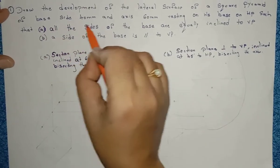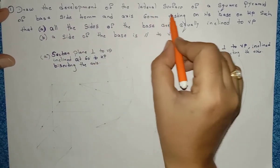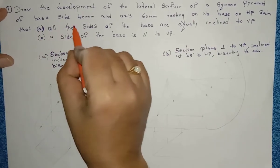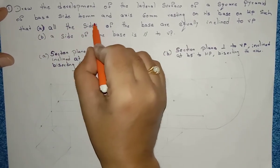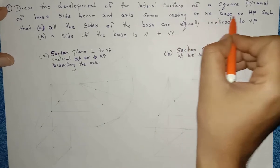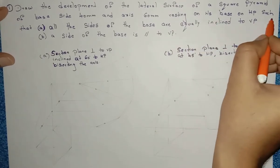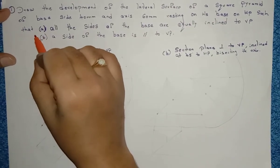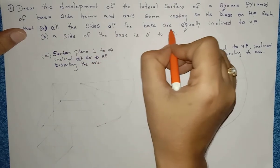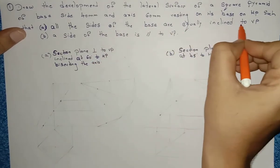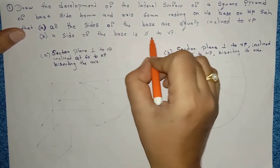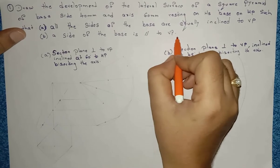First, read the question. Draw the development of the lateral surface of a square pyramid of base side 40 mm and axis 60 mm, resting on its base on HP. Condition A: all the sides of the base are equally inclined to VP. Condition B: a side of the base is parallel to VP.